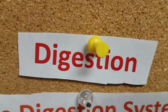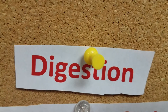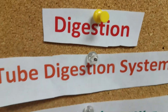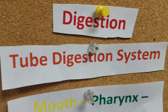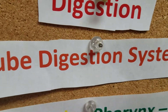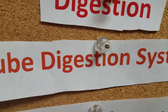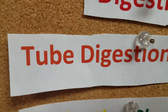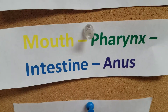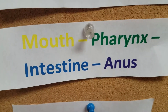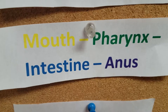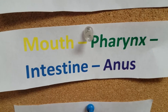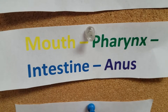Next I'm going to talk about the three main systems of a worm. First I'm going to start with digestion. The worm has a tube digestion system, which means that it flows one way — going in one way and then out the other. Here's a flow chart of the digestive system starting with the mouth, through the pharynx, to the intestine, and out the anus.